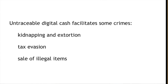Another reason governments might worry about untraceable digital cash is that it makes certain kinds of crimes easier. In particular, crimes like kidnapping and extortion that involve payment of a ransom become easier when payment can be done at a distance and anonymously. Law enforcement against kidnappers has often relied on exploiting the handoff of money from the victim's family to the criminals — when that can be done by email at a distance anonymously, it becomes much harder for law enforcement to follow the money. Similarly, tax evasion becomes easier when people can move money around in transactions not easily tied to a particular individual. And the sale of illegal items becomes potentially easier when the transfer of funds can happen at a distance without going through a regulated institution. A good example of that is Silk Road.